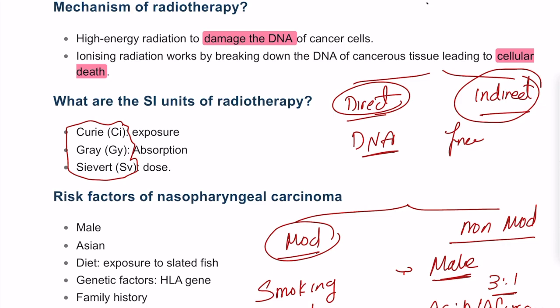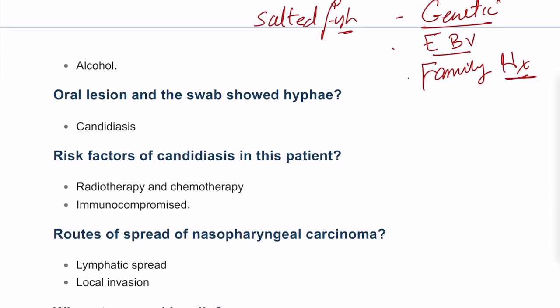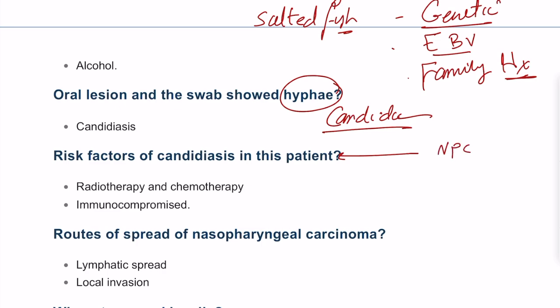For radiotherapy units: Curie measures exposure, Gray measures absorption, and Sievert measures the dose of radiotherapy. If a patient presents with an oral lesion showing hyphae, that indicates candidiasis. This patient is at higher risk because they have nasopharyngeal carcinoma, may have received chemo or radiotherapy, and may be immunocompromised.